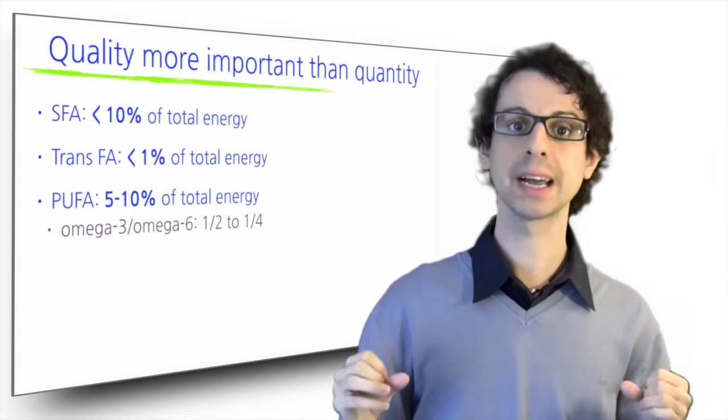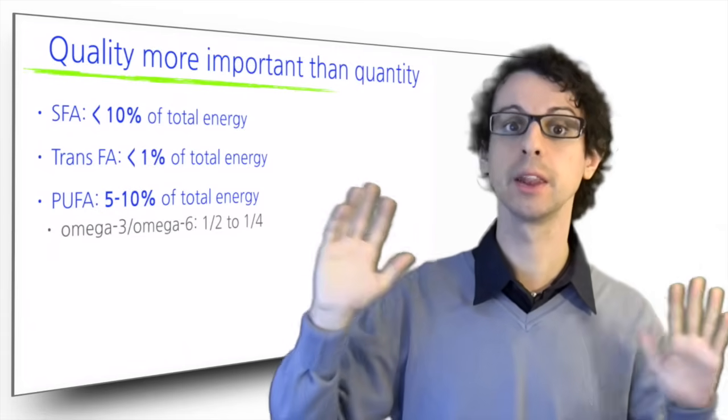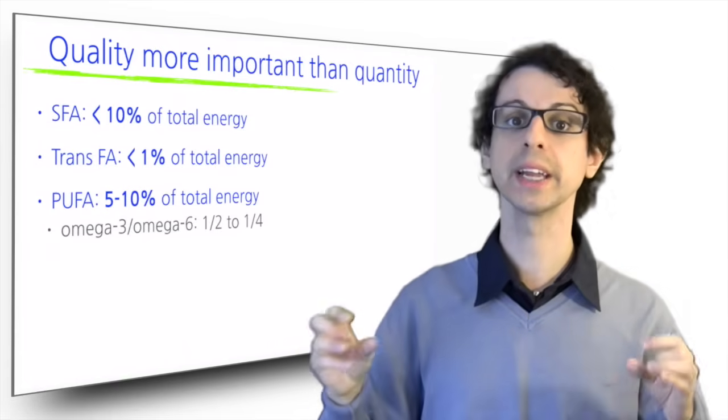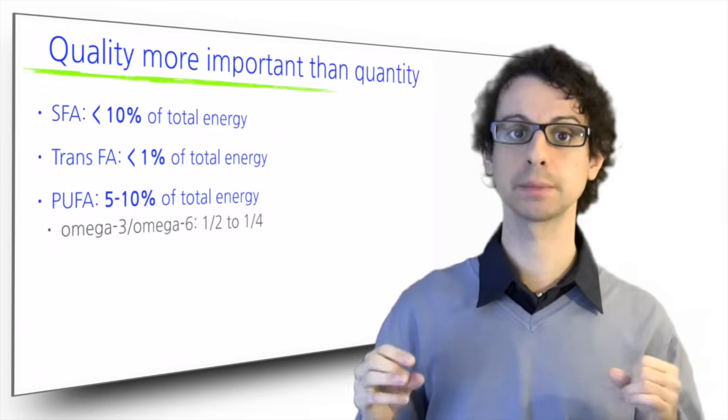Another factor to keep in mind about polyunsaturated fats is the ratio between omega-3 and omega-6, which ideally is between 1 to 2 and 1 to 4, meaning at least a gram of omega-3 for every 2 to 4 grams of omega-6.